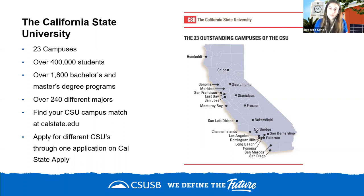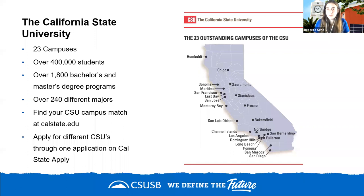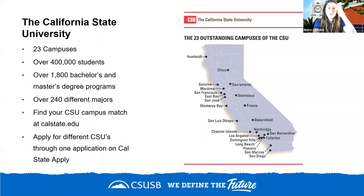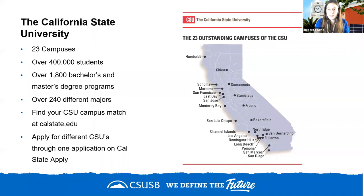Since the majority of higher education students seek bachelor's or master's degrees, the state doesn't give every public institution access to doctorate-level degrees. There are over 1,800 different bachelor's and master's degree programs and 400,000 students across the campuses. All CSU campuses share one unified website at calstate.edu. My campus, CSUSB, is in southern California near Fullerton and Northridge in the greater Los Angeles area.